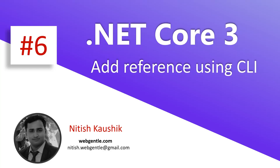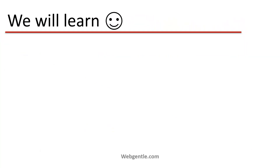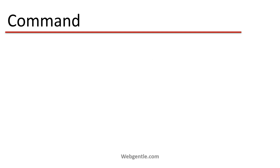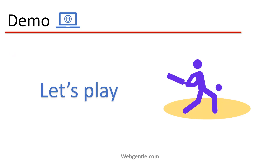Hi everyone, welcome to the new part of this series. In this video we will learn how to add a project reference to another project using the .NET Core CLI. We will learn how to add reference between two or more applications. To add a reference we need to learn the following command: we have to use 'add' and 'reference' — these two keywords we are going to use to add the reference from one project to another.